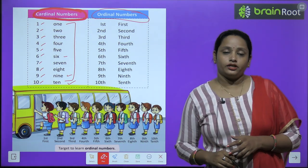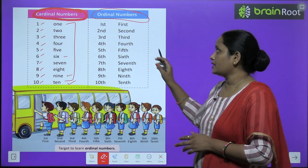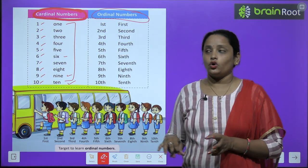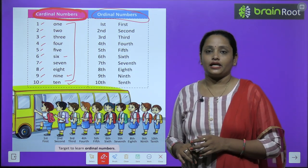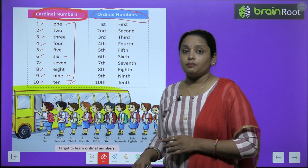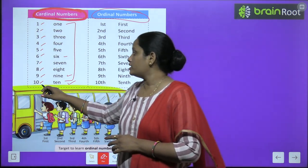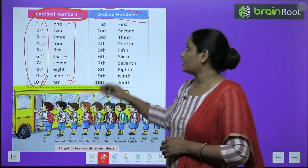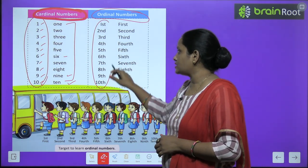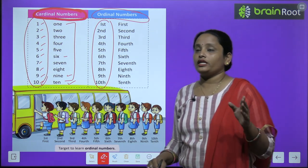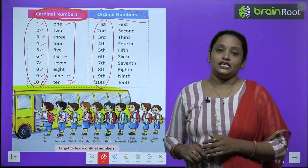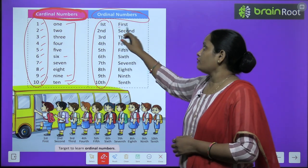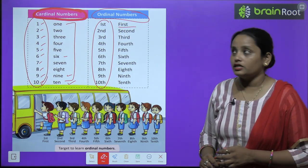Next, let's quickly move to ordinal numbers. Which are the ordinal numbers? We have written 1 to 10 as ordinal numbers. When we write cardinal numbers we write 1 to 10 simply. But when we write ordinal numbers, we write differently — for One we add ST, and it becomes FIRST: F-I-R-S-T.